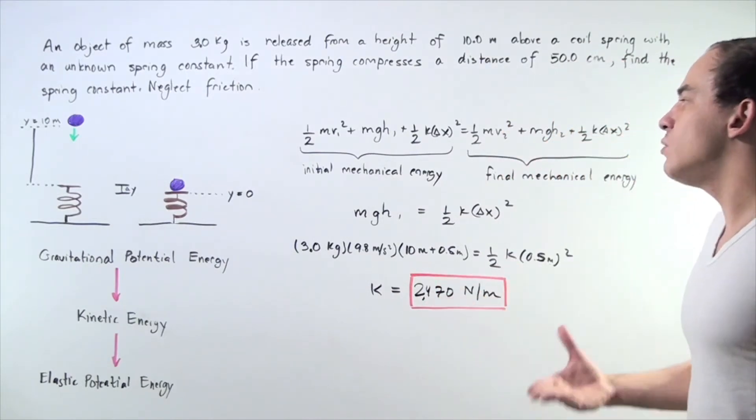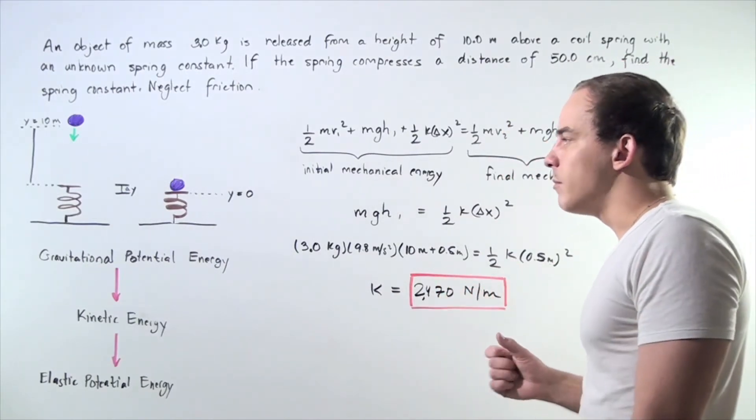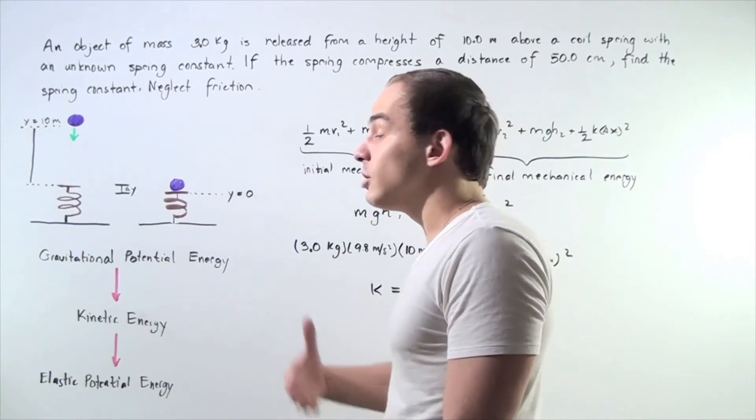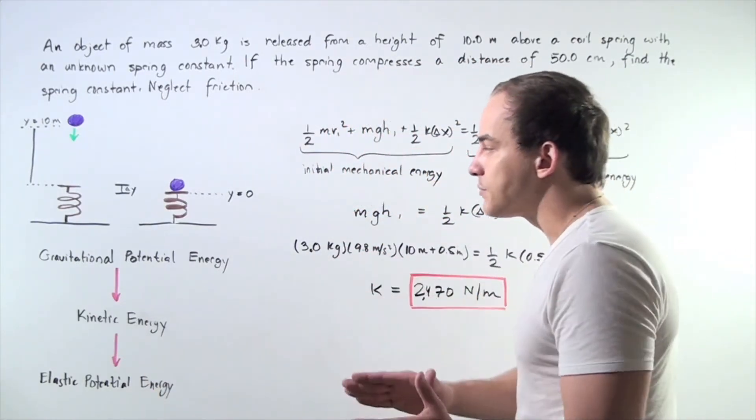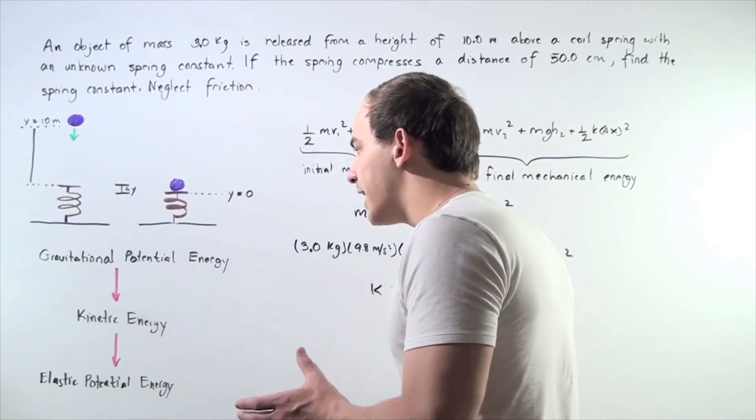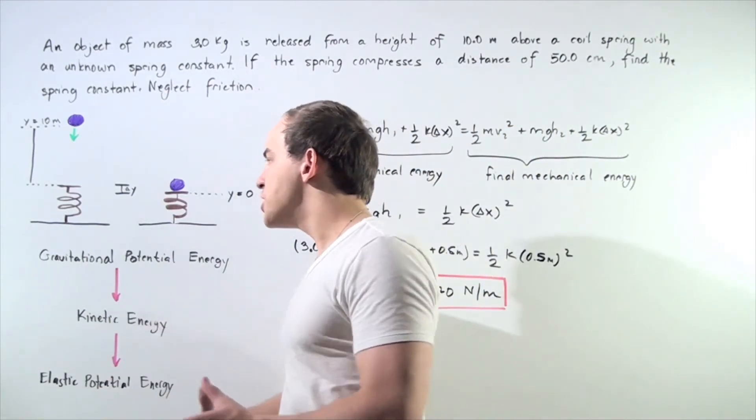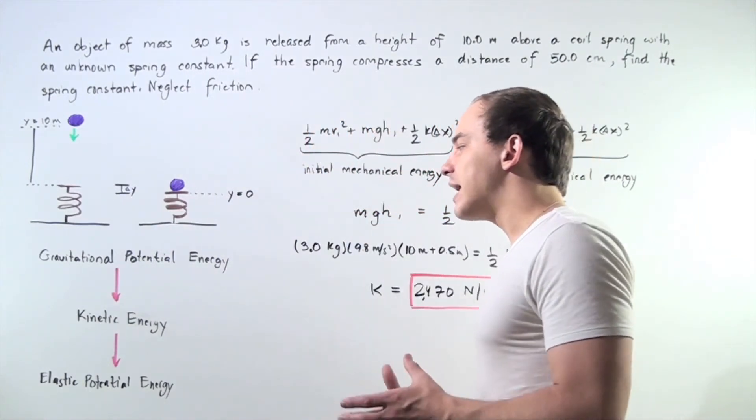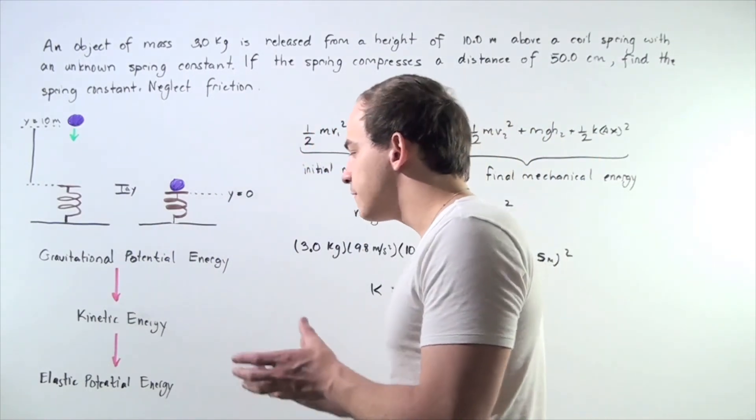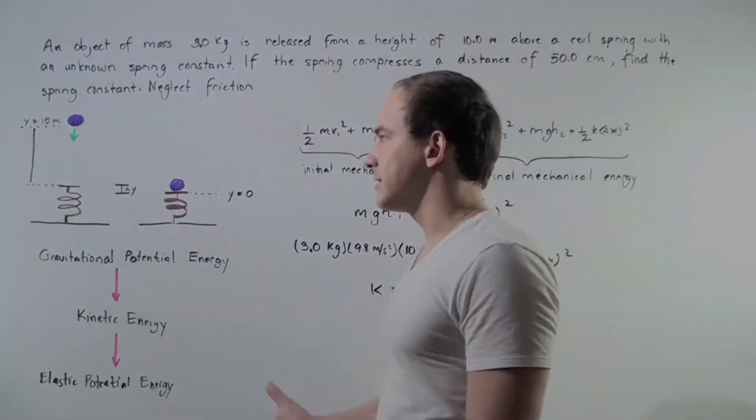This is simply one way to solve our problem. A second way and a longer way would have been to break this problem down to two steps. First, we calculate how much kinetic energy is produced right before impact. Then, in the second step, we use that kinetic energy calculation to find our spring constant.